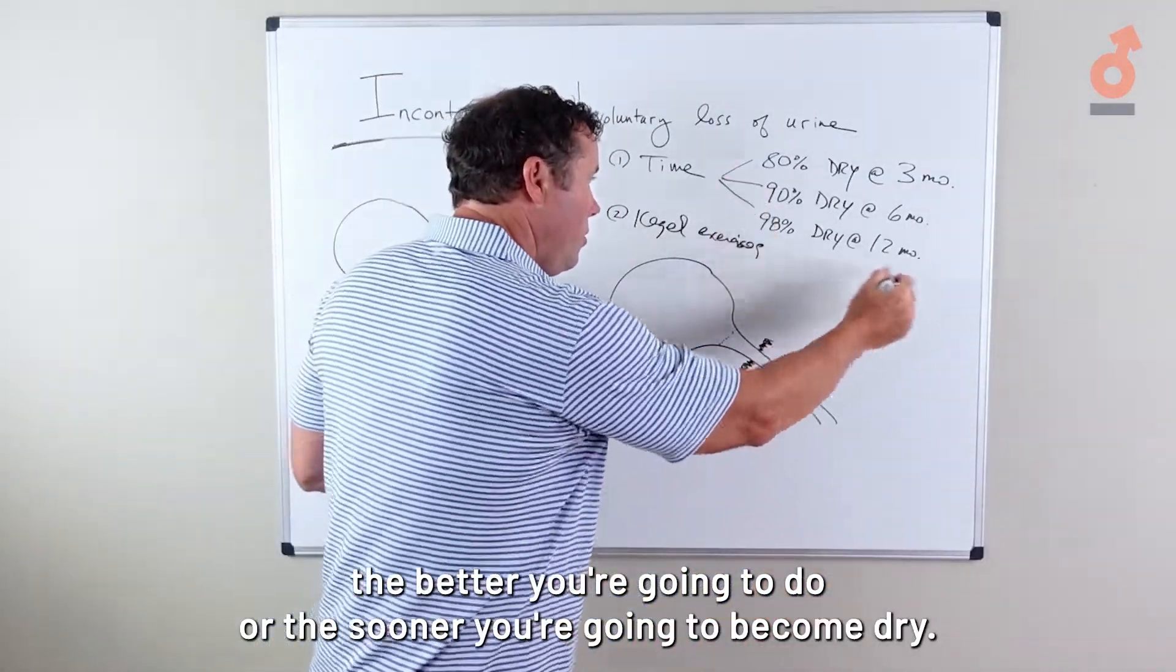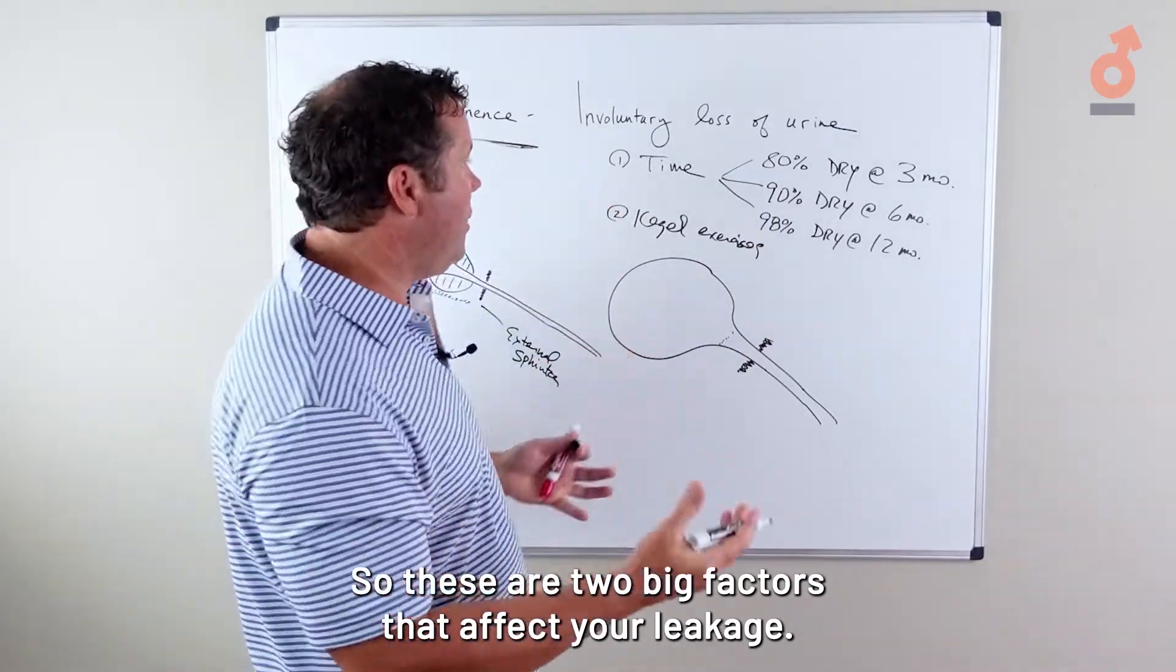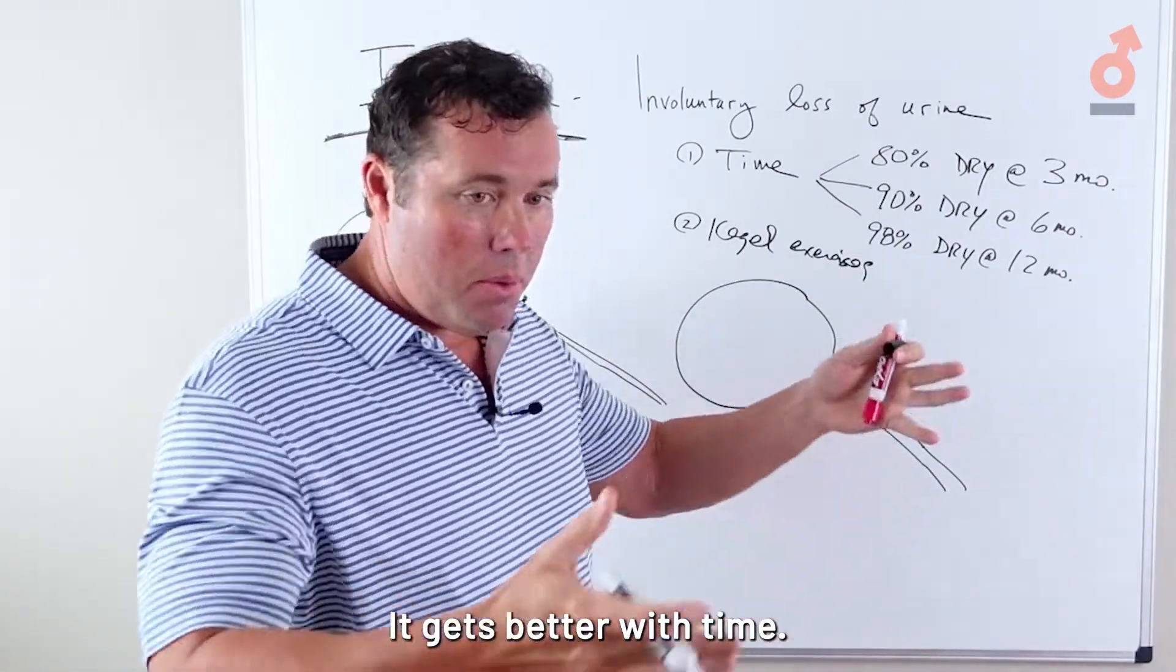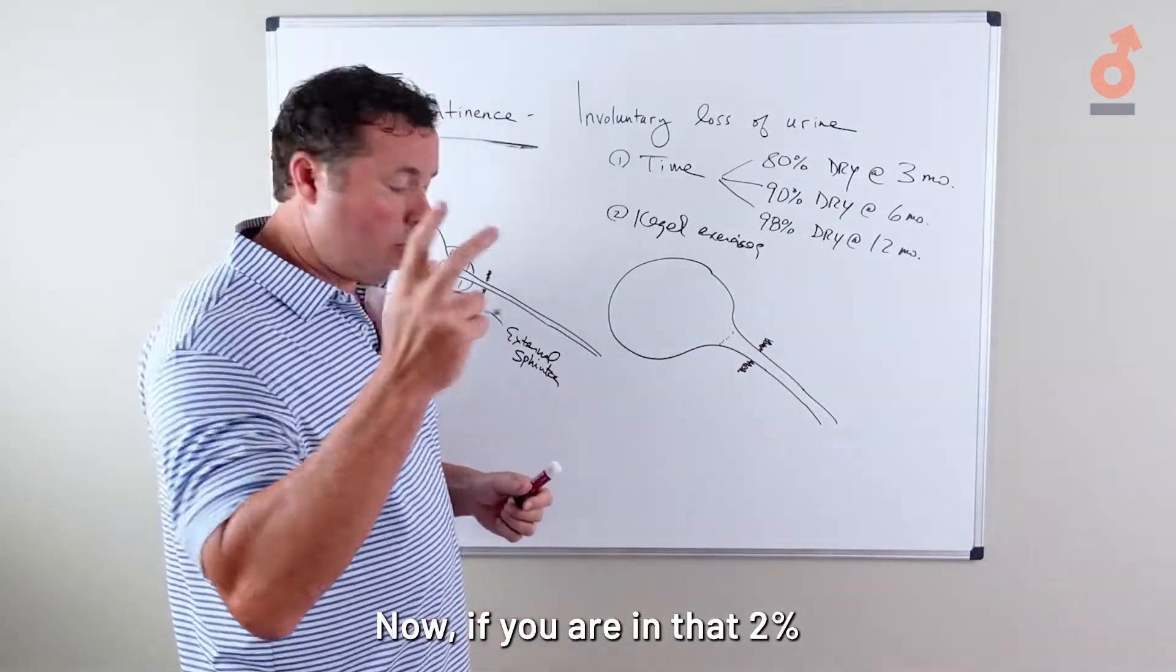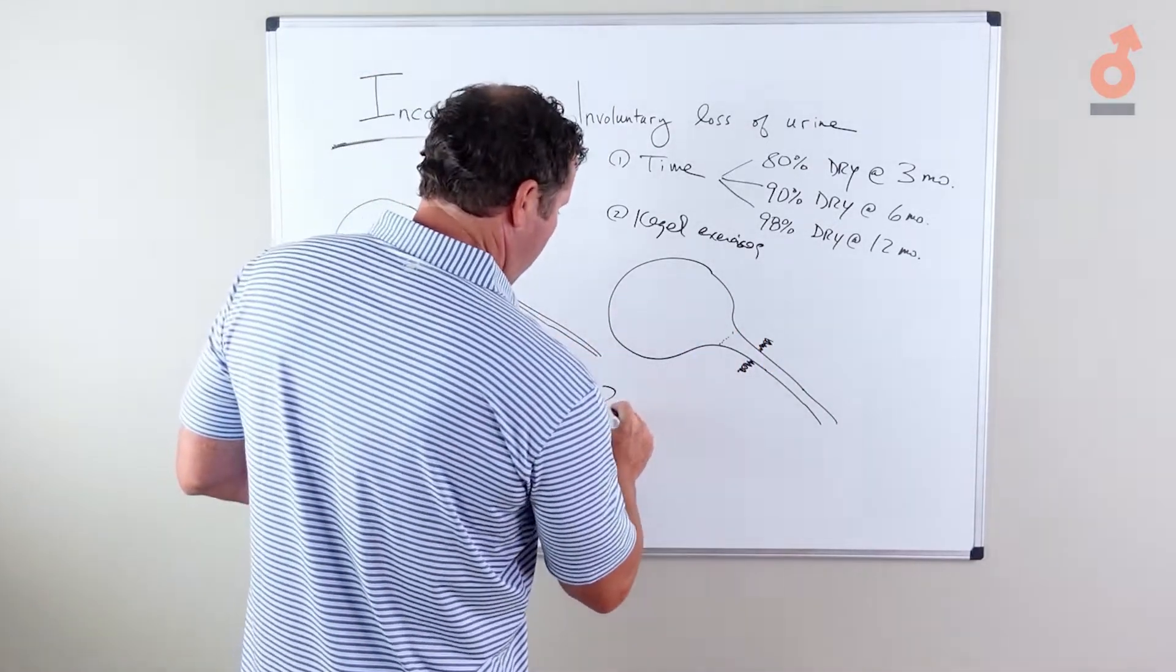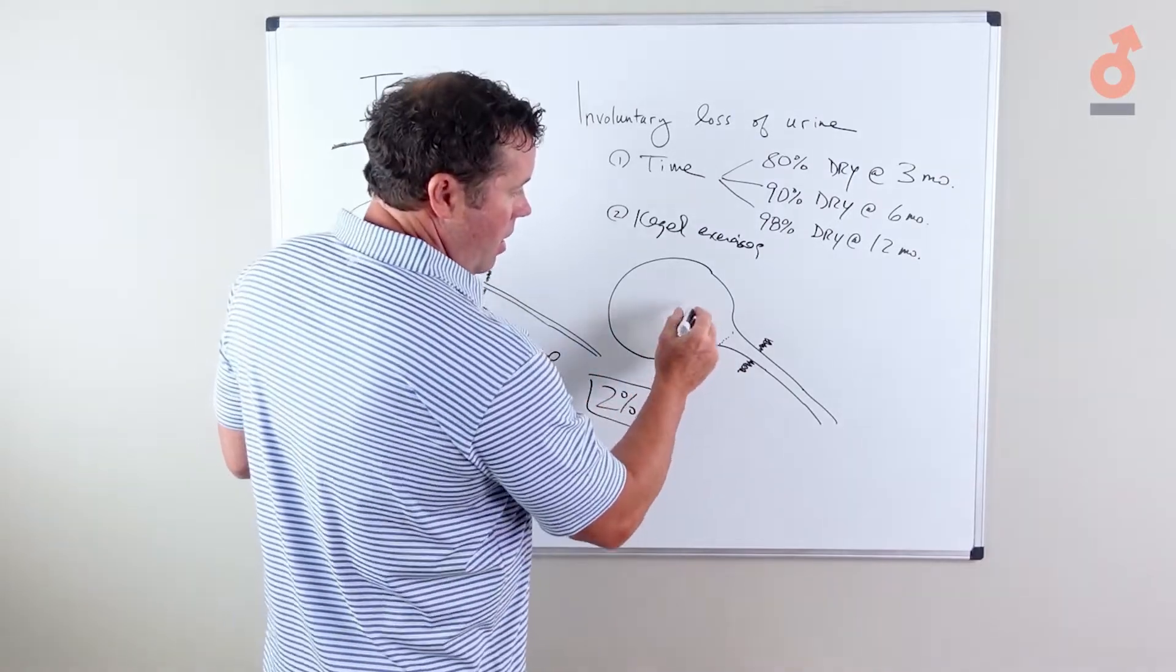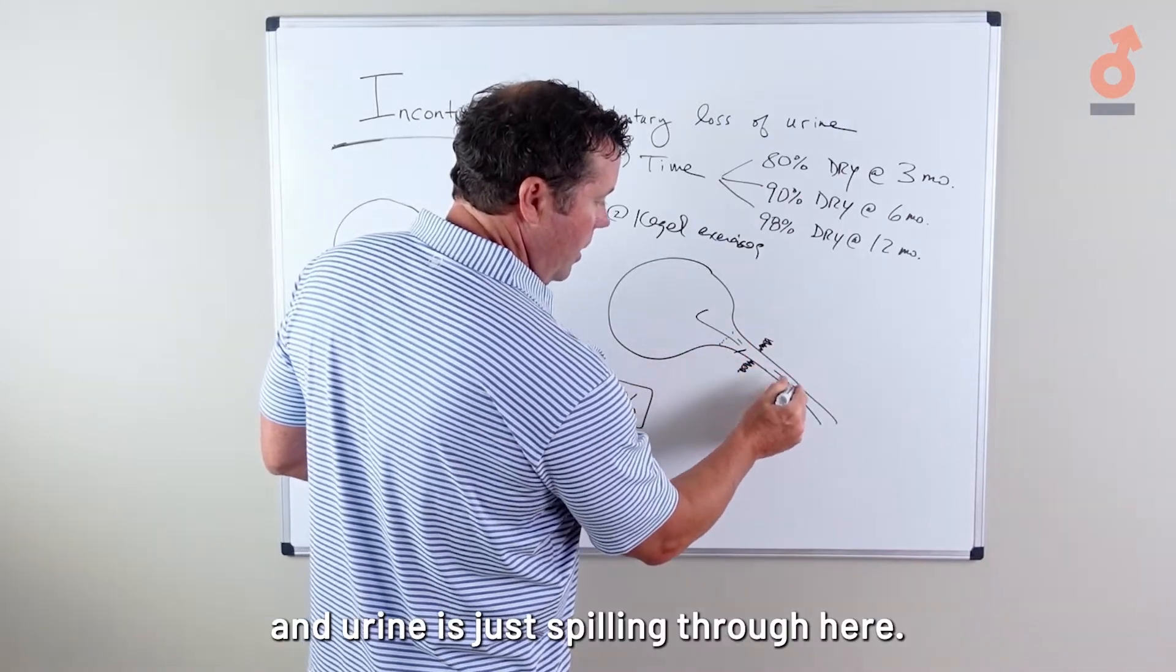So these are two big factors that affect your leakage. Most people are having leakage episodes early on—it gets better with time, Kegel exercises can improve. Now if you are in that two percent that has persistent leakage of urine—coughing, laughing, lifting, running—and urine is just spilling through, numerous pads a day are required, there are some things that can be done.